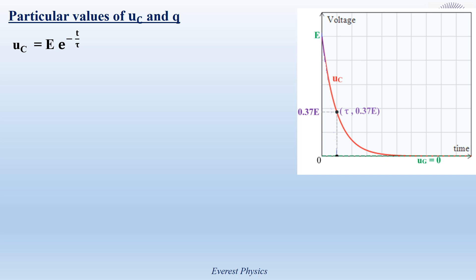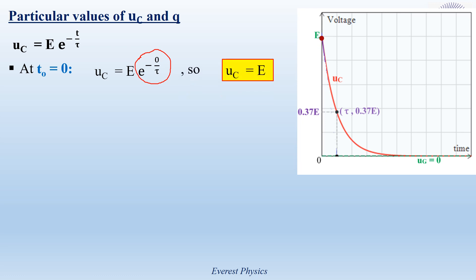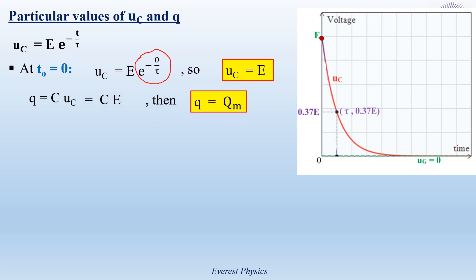Referring to the expression of UC during discharging, let's determine particular values at specific instances. At time equal to 0, replacing T equals 0 gives UC equals E times e^0, and since e^0 equals 1, UC equals E. So at time 0, the voltage across the capacitor starts at maximum value E. The charge Q equals C times UC equals CE, which is the maximum charge QM.